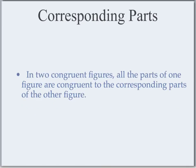Let's talk about corresponding parts of congruent figures. In two congruent figures, all the parts of one figure are congruent to the corresponding parts of the other figure. So in other words, the longest side of one figure is congruent to its corresponding side — the longest side of the other figure. The smallest angle of one figure is congruent to the smallest angle of the other figure, because those parts correspond with each other.